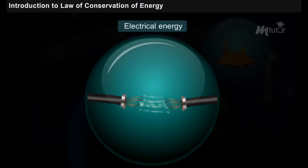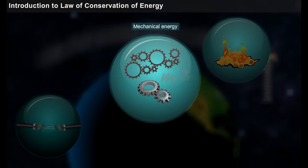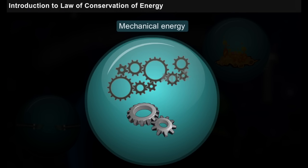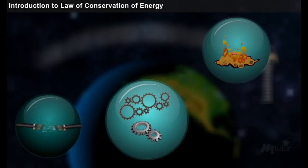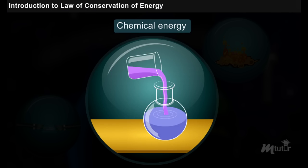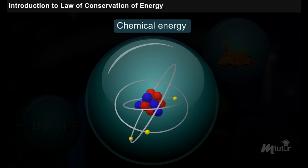Electrical energy is the energy due to electron flow. Mechanical energy is the energy stored by a machine that induces motion. Chemical energy is the energy that binds atoms in a molecule.